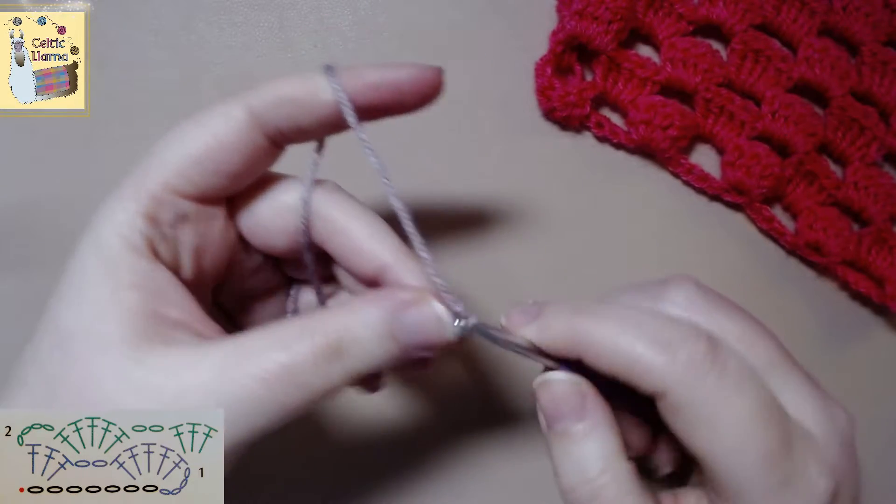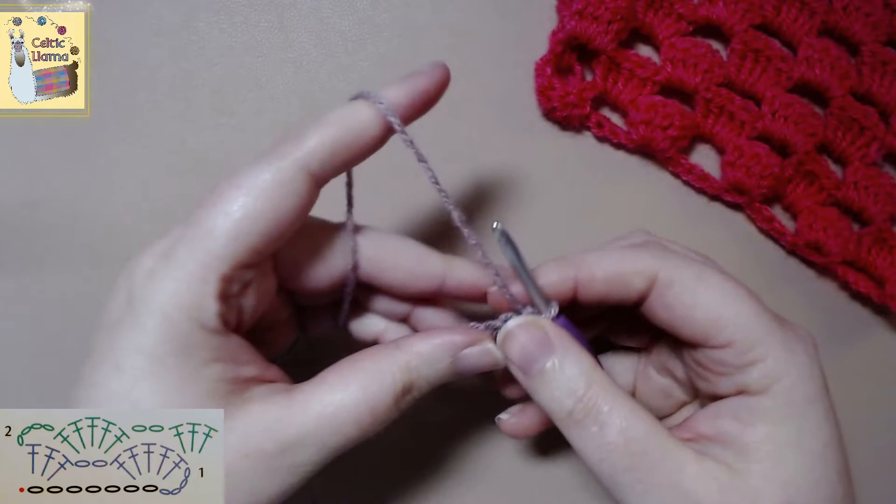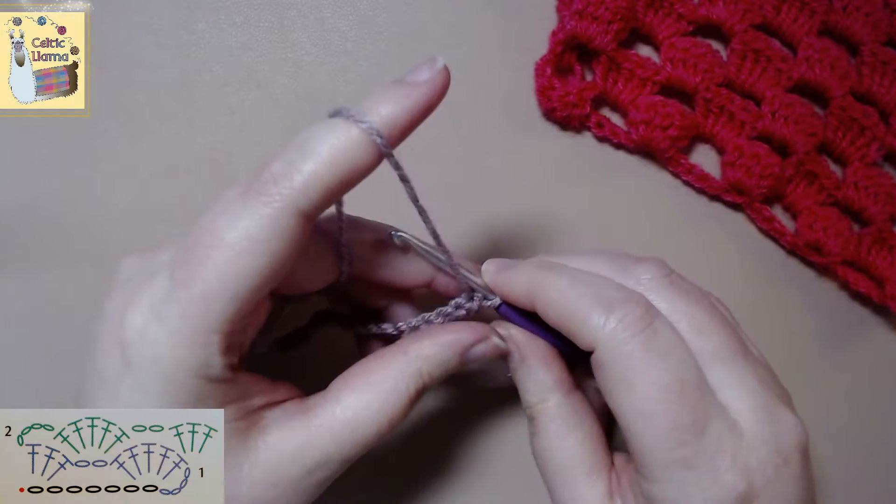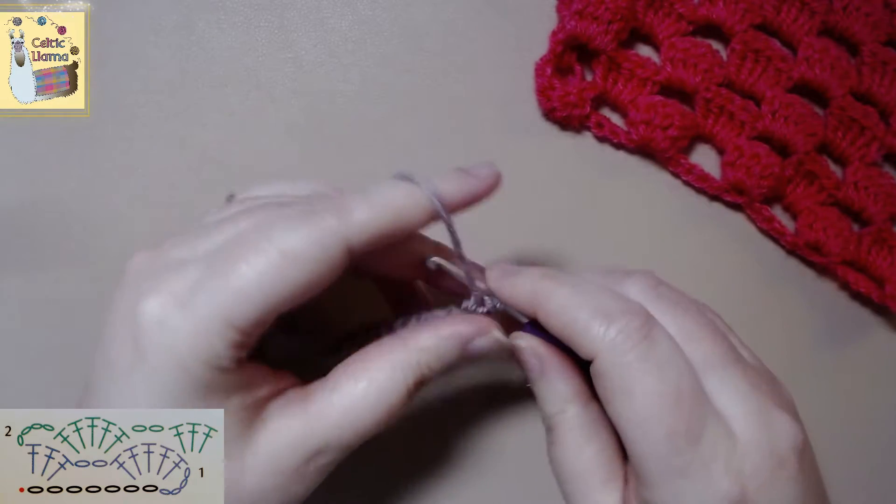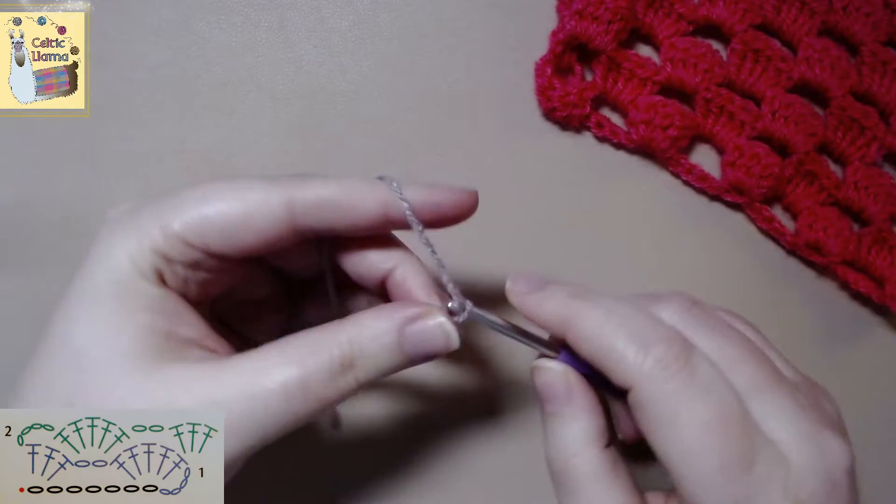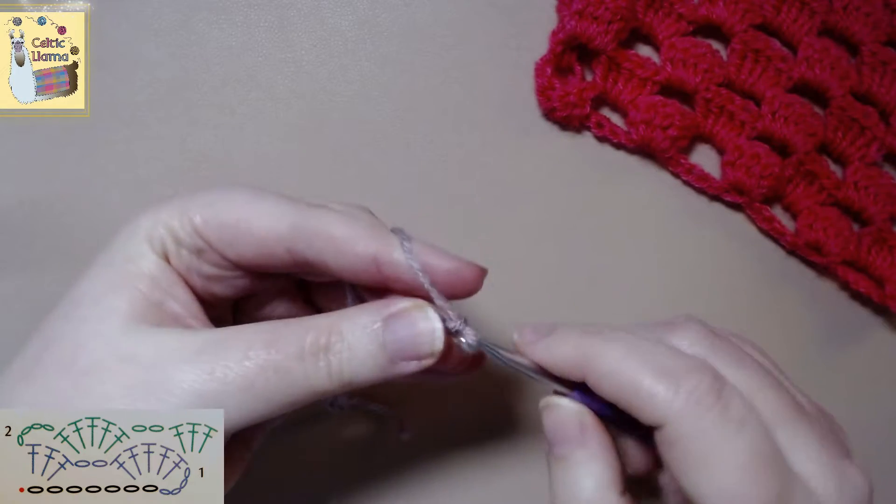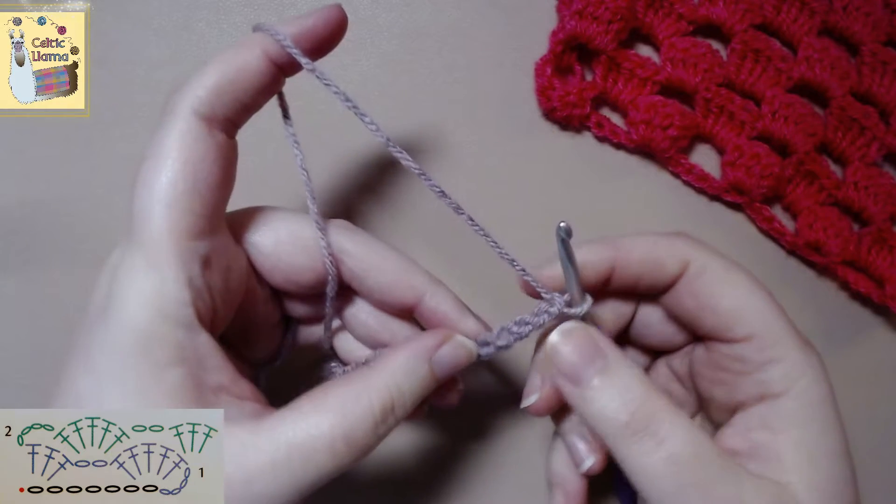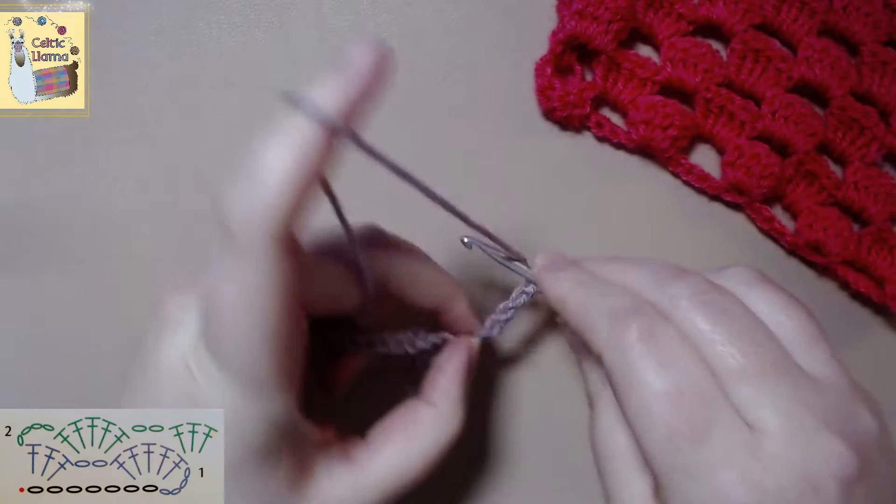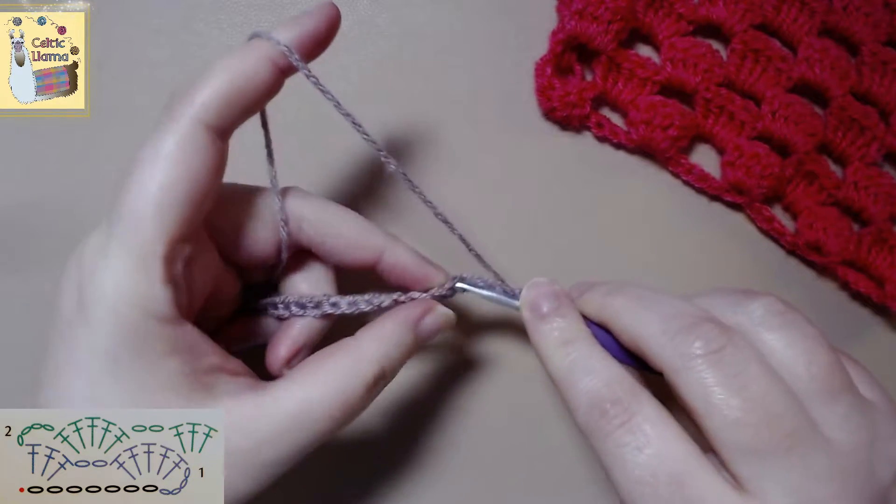Once you have all of your chains you want to go ahead and chain four. In the fifth chain from the hook you want to work five double crochets all in the same stitch.